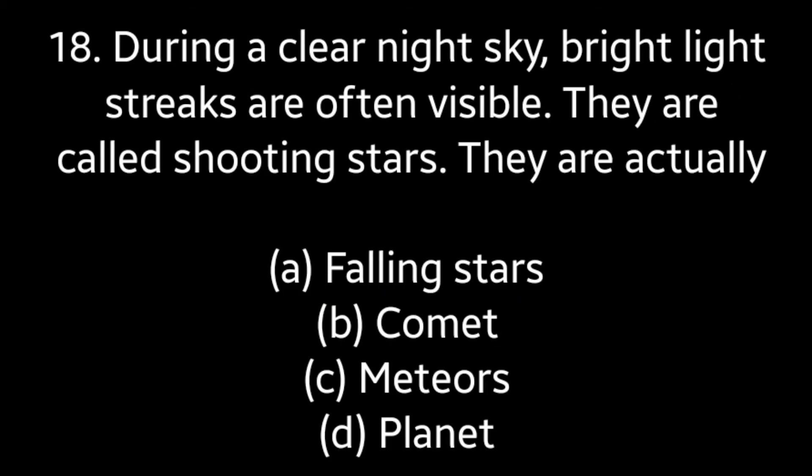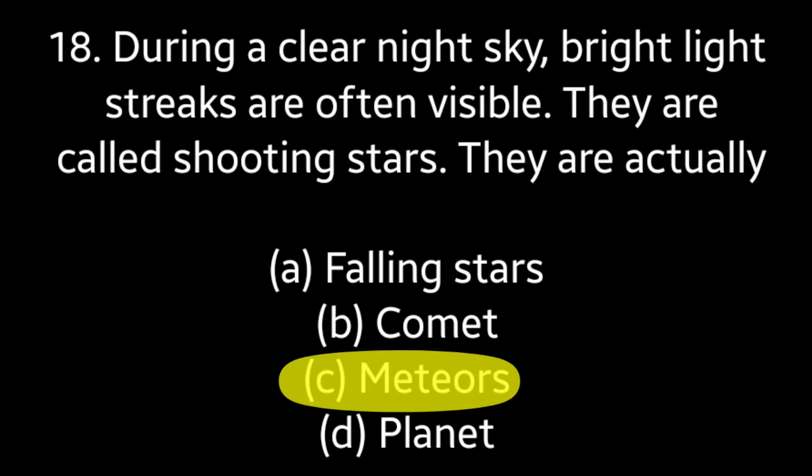Question number 18: During a clear night sky, bright light streaks are often visible. They are called shooting stars. They are actually — Falling stars, Comet, Meteors, Planet. Answer is option C — Meteors.